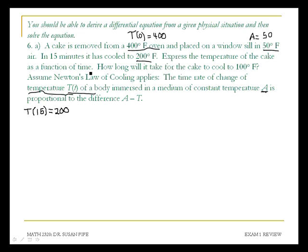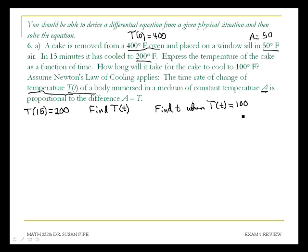We need to express the temperature of the cake as a function of time — we're going to find the temperature of the cake at any time. We also want to find how long it will take for the cake to cool to 100 degrees, that is, find T when the temperature equals 100 degrees. Assume Newton's law of cooling applies.